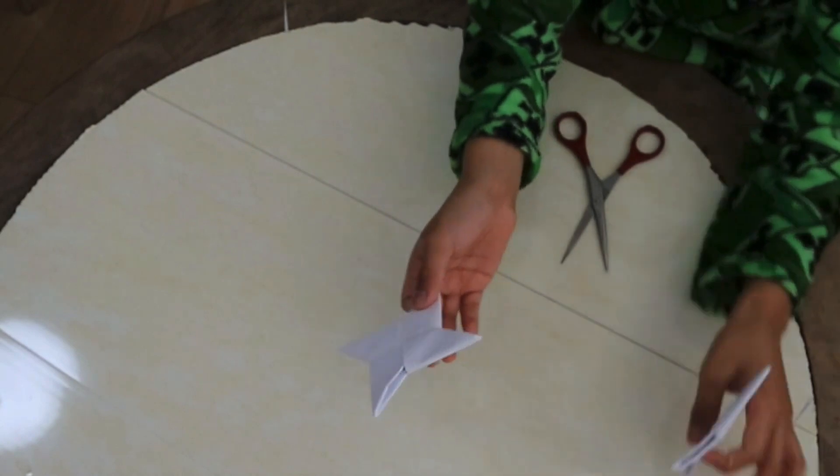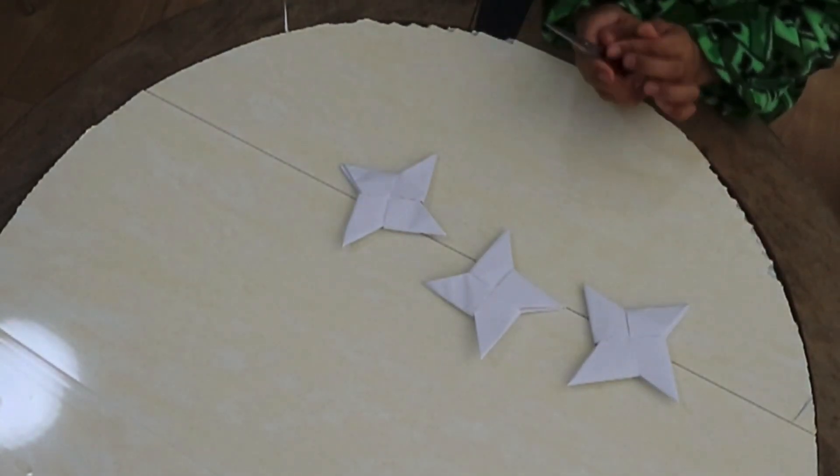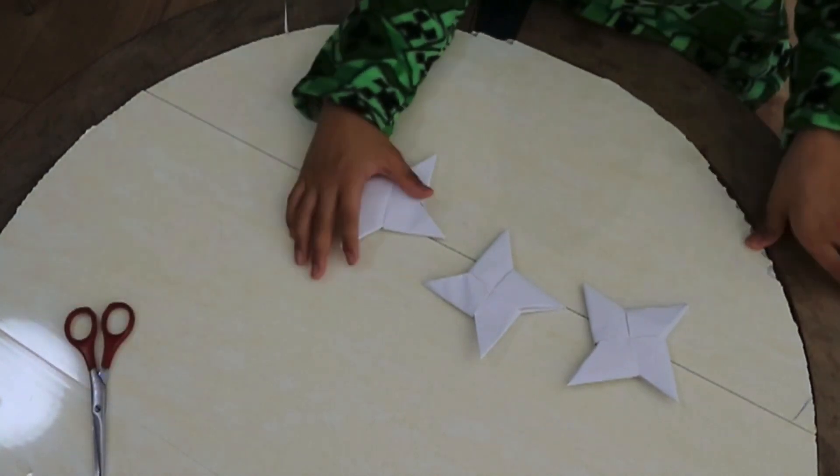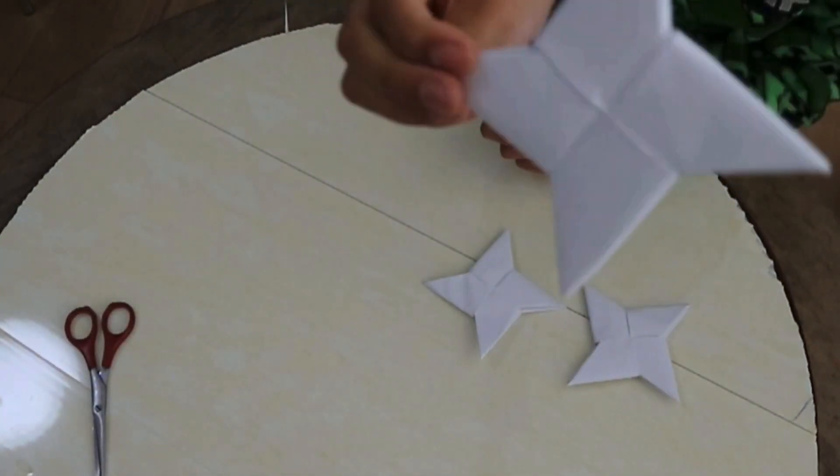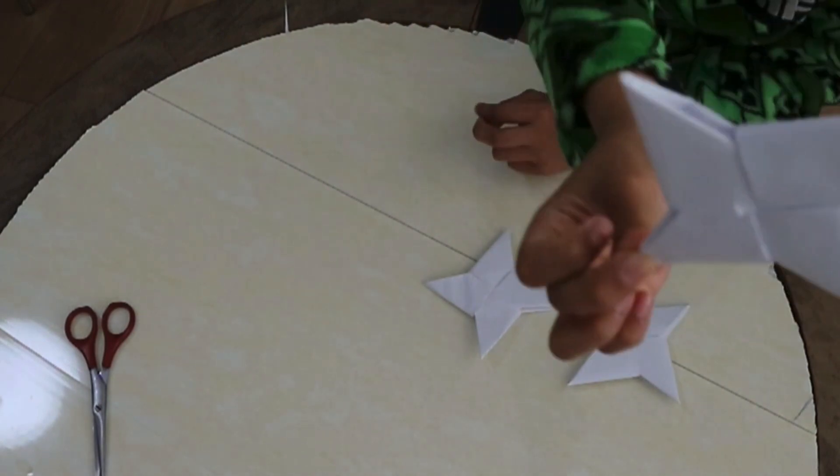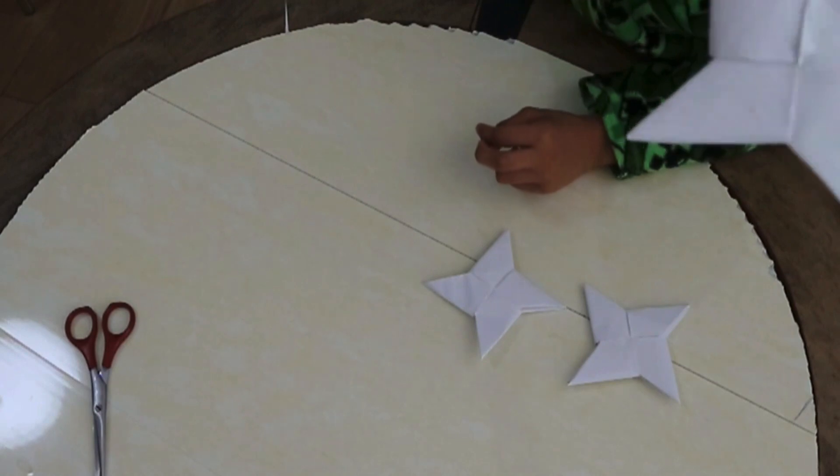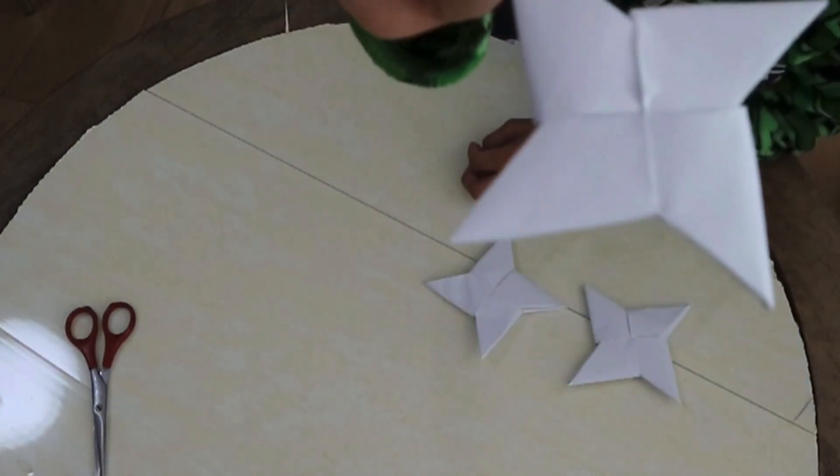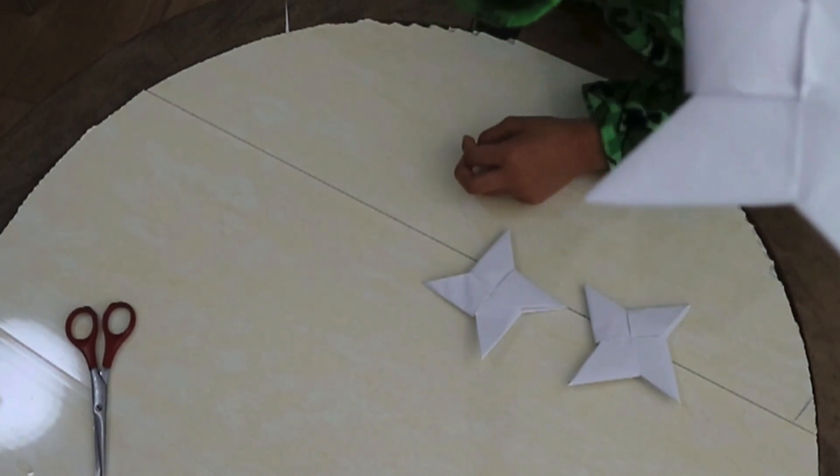Now I have three. One, two, three. As you can see, this is how it looks like. It's just like a star. So you can observe closely right here. So it's like a pattern.